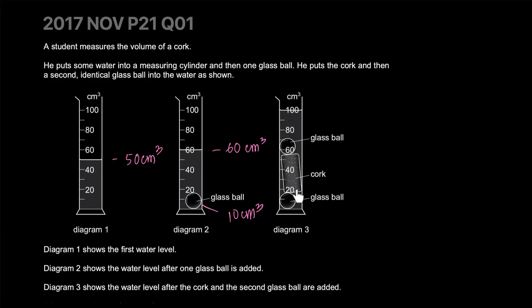He puts the cork and then a second identical glass ball into the water. He starts with 50 centimeter cubed, adds two glass balls which are each 10 centimeters, and adds a cork of unknown volume. All of that should sum up to 100 centimeter cubed. Solving: 50 plus 20 is 70, plus x equals 100. X comes out to be 30 centimeter cubed.